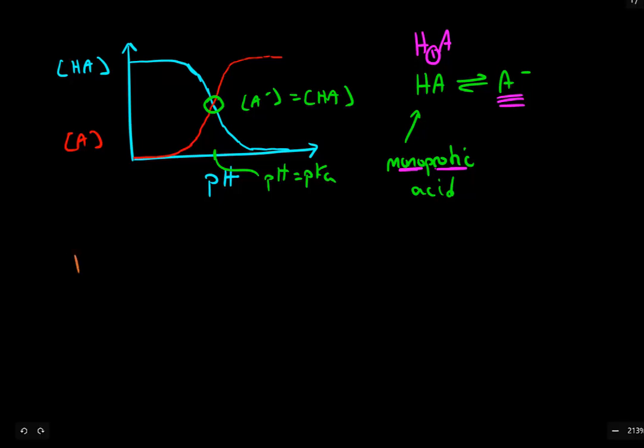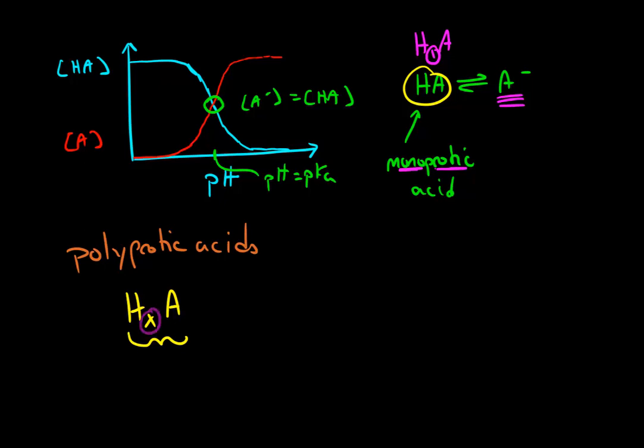But as it turns out, there are many examples of molecules known as polyprotic acids. And a polyprotic acid is again as the name suggests, we can represent it as HXA. So this is our generic acid formula, just like we see up here. But the big difference now is that we have this extra term X, and this is meant to suggest that this acid has multiple protons that is able to donate.